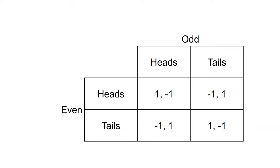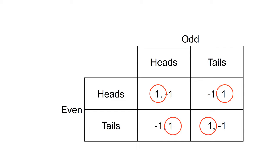To determine this, we work through the matrix as we did in the previous example. If Odd shows heads, Even can either show heads and win or tails and lose — they'll choose to show heads. If Odd shows tails, Even can either show tails and win or show heads and lose — they'll choose to show tails. Similarly, if Even shows heads, Odd can either show tails and win or show heads and lose — they'll choose to show tails. If Even shows tails, Odd can either show heads and win or show tails and lose — they'll choose to show heads.